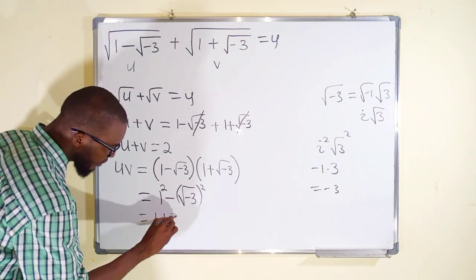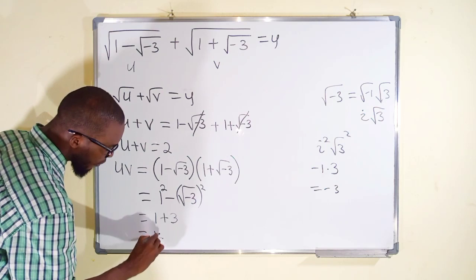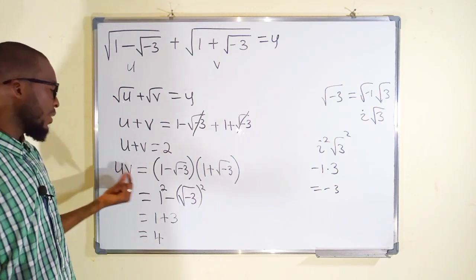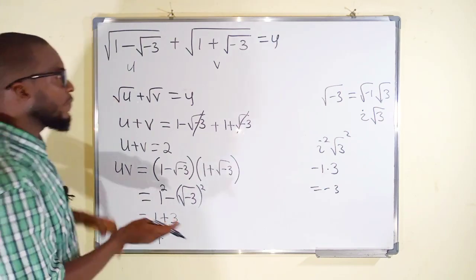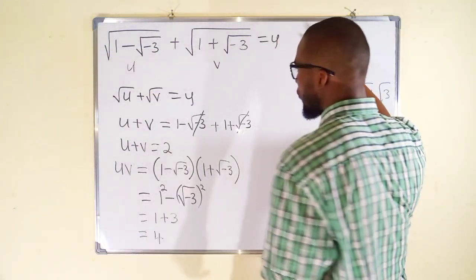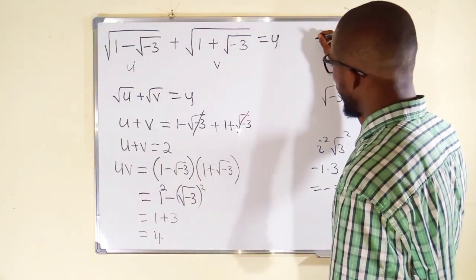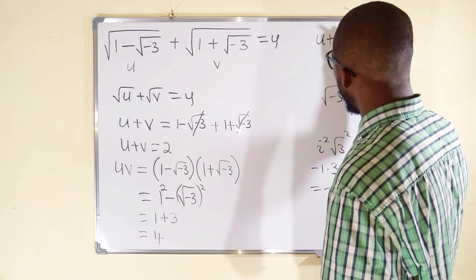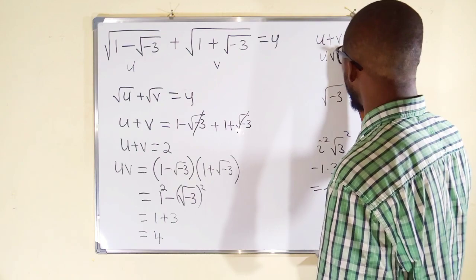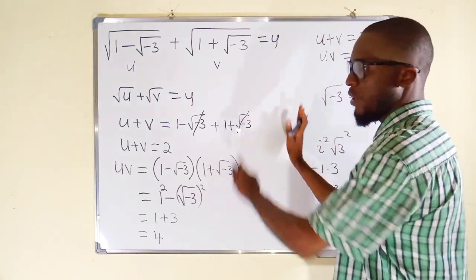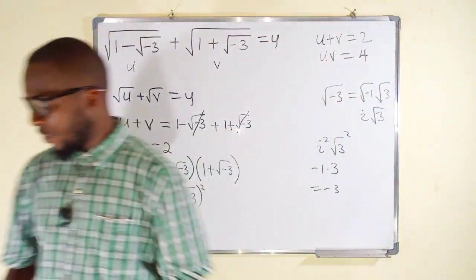So this is the same thing as 1 plus 3, and this is equal to 4. So by multiplying uv we end up getting 4. Let me write these two pieces of information aside: we have u + v = 2 and uv = 4. So let me wipe this away and solve my equation because I have formed the equation already.